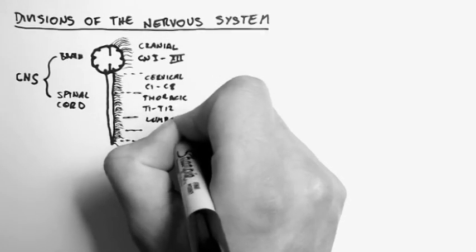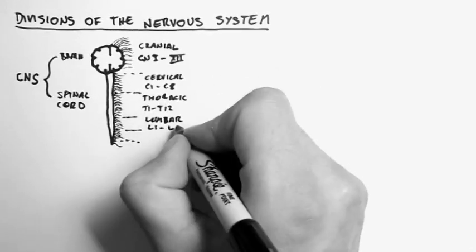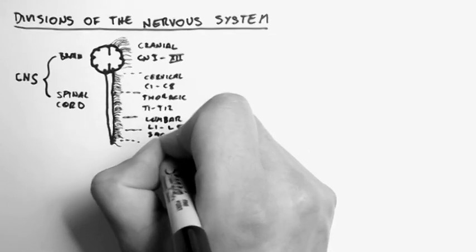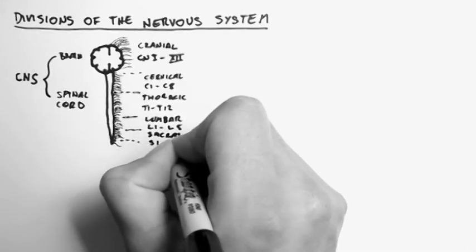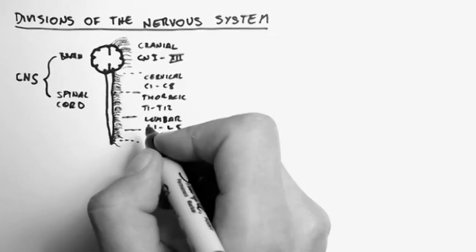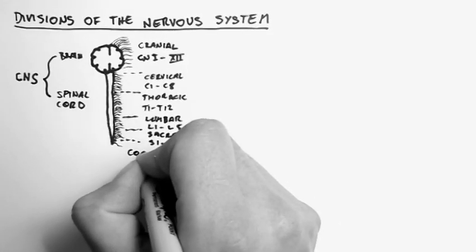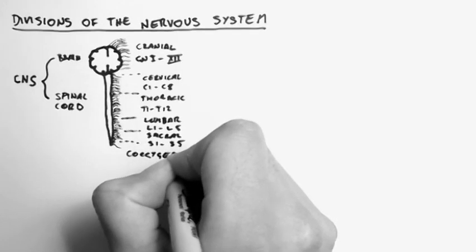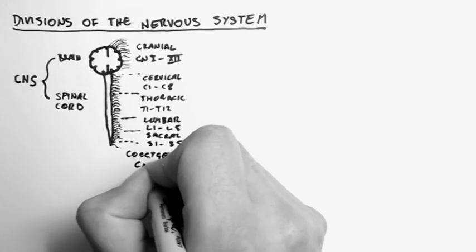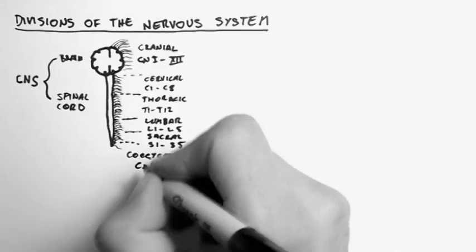Then the lumbar nerves, which there's 5, L1 to L5. The sacral, which are S1 to S5. And then one little nerve, right down the bottom, called the coccygeal nerve. And we call that CX1.